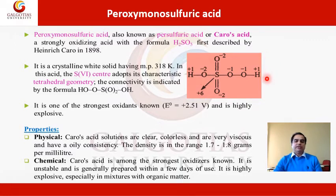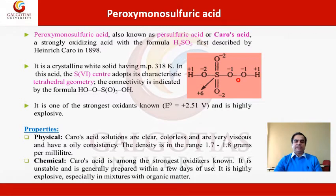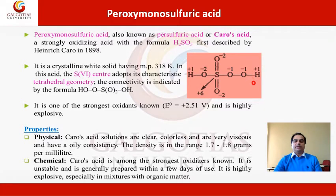This is the structural formula of H2SO5, that is peroxy monosulfuric acid, in which we can see the oxidation states of different atoms. The oxygen-oxygen bond represents the peroxide linkage in H2SO5, which is why both those oxygen atoms have a minus 1 oxidation state, while all the other three oxygen atoms — which are normal oxygen — have a minus 2 oxidation state, which is the normal oxidation state of oxygen. In this compound, sulfur has a plus 6 oxidation state, while both hydrogen atoms are present in a plus 1 oxidation state.